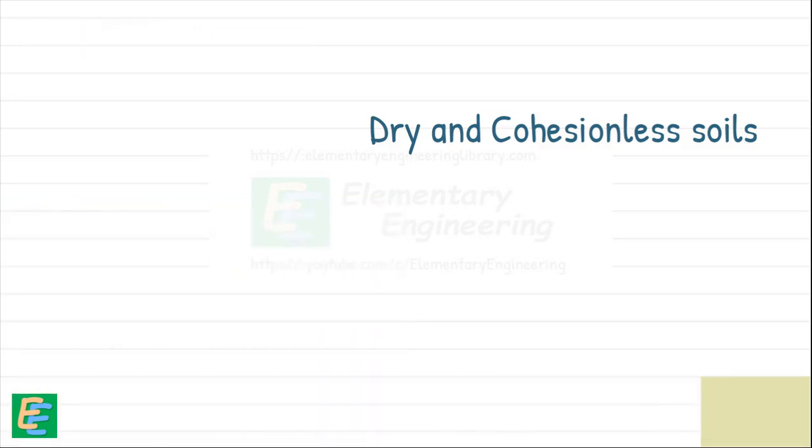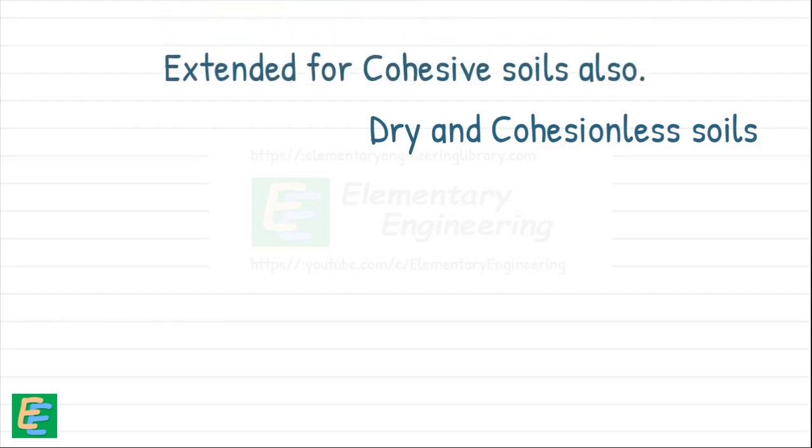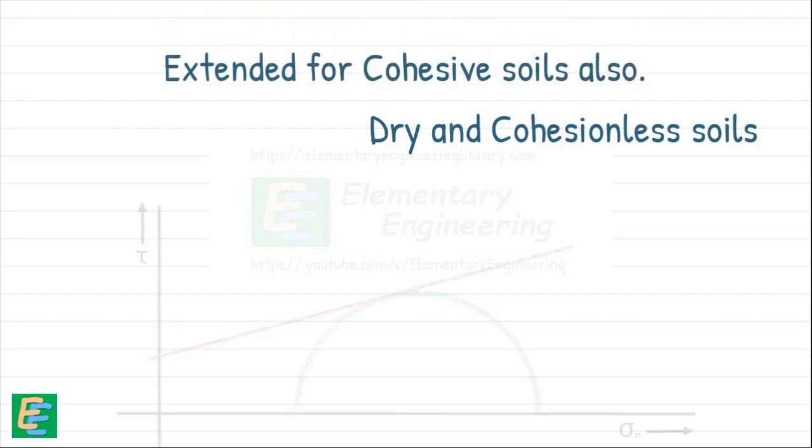Finally, while Rankine's theory is for cohesionless soils only, it was extended for cohesive soils also, where the failure envelope includes a cohesion intercept, which was zero for cohesionless soils.